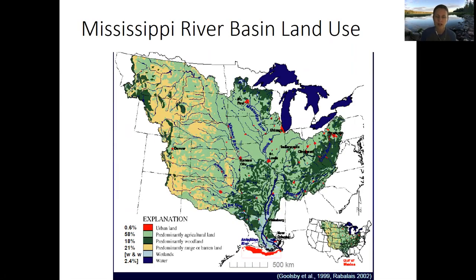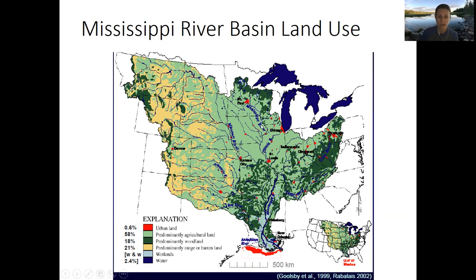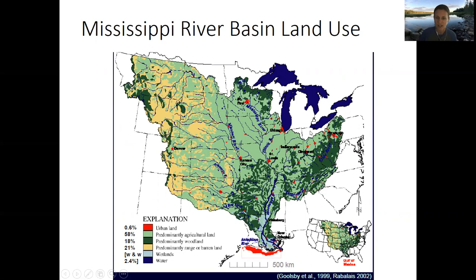When we talk about nitrogen and phosphorus loading in our fresh waters, we know that it really has to do with what's happening in the watershed. If you look at a really big scale at the whole Mississippi River Basin and look at what's happening with land use across the basin, we can see on this map that predominantly throughout the watershed, we have a lot of agriculture. The Mississippi River Basin is outlined here — it's a very large river basin, draining over 40% of the continental United States.